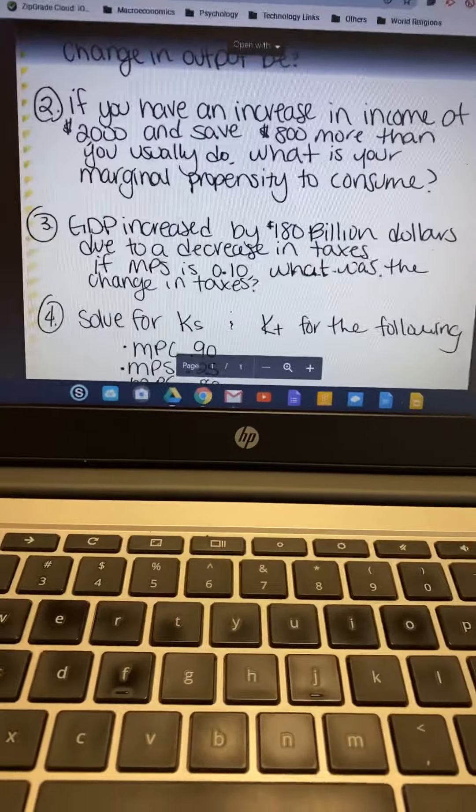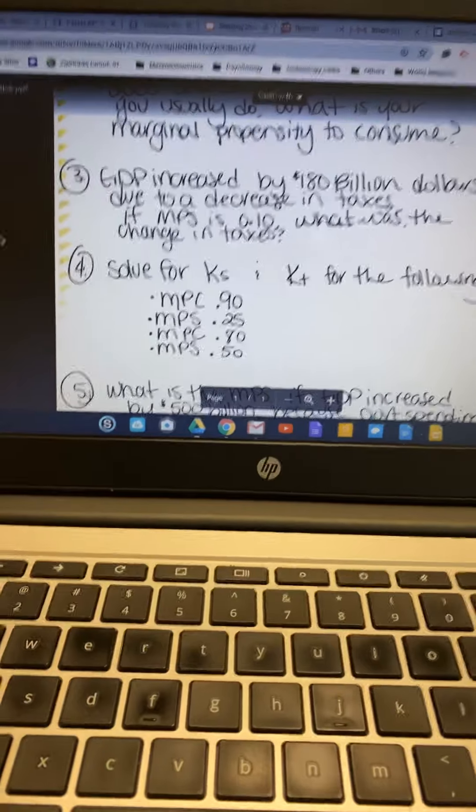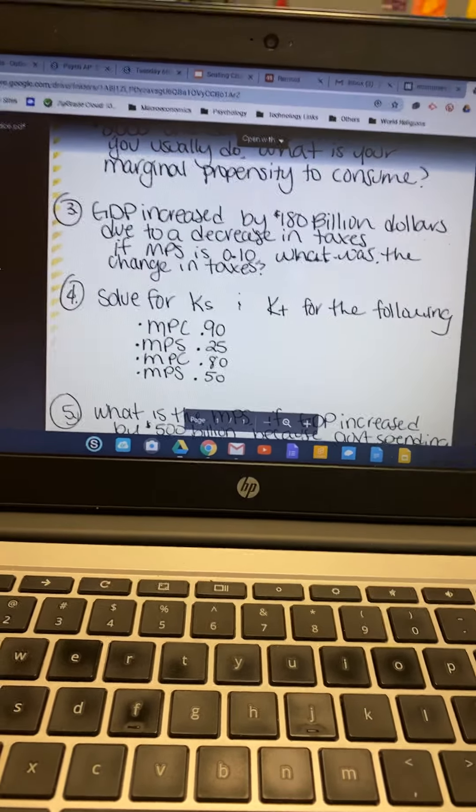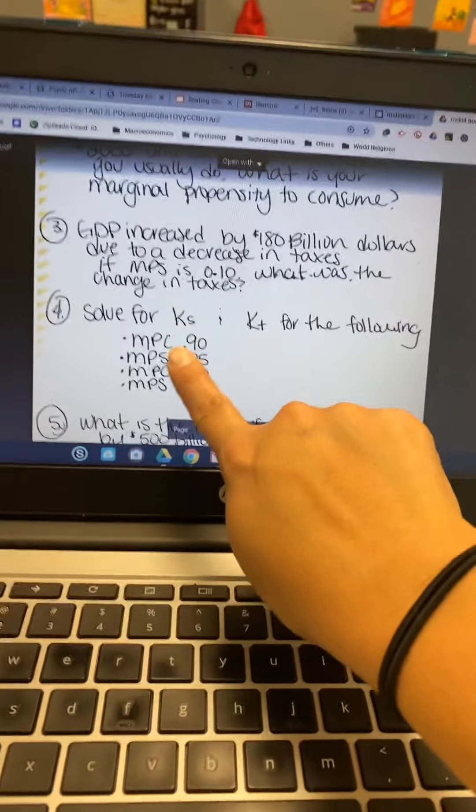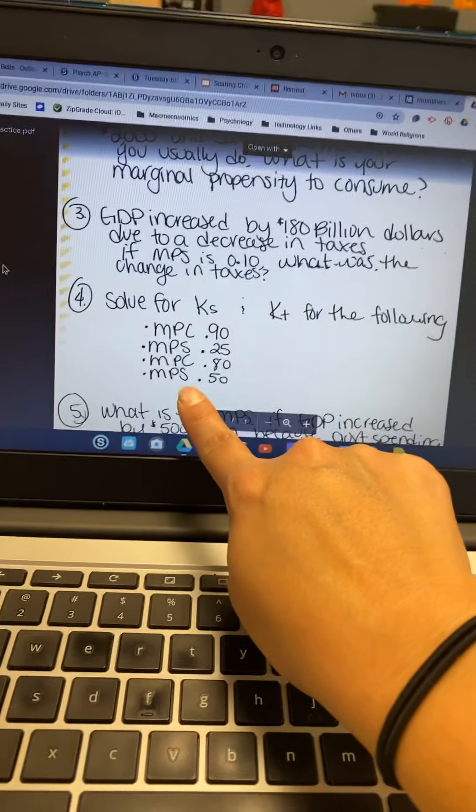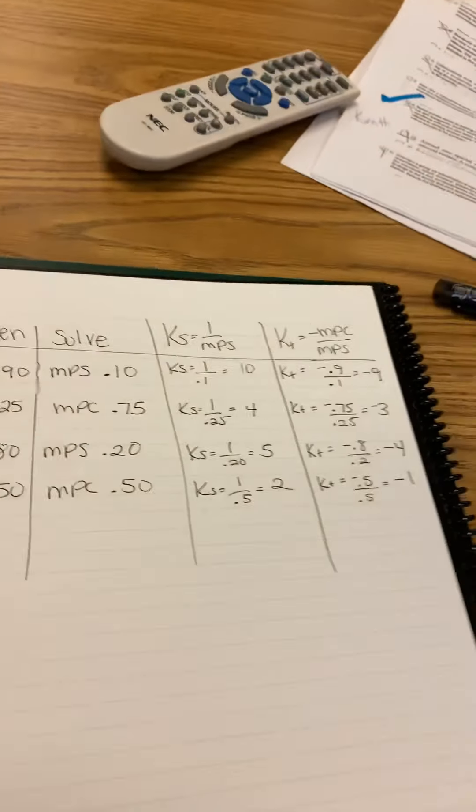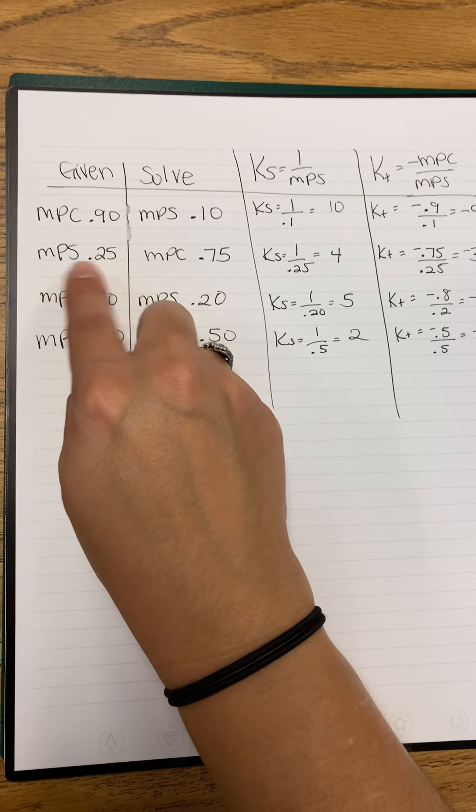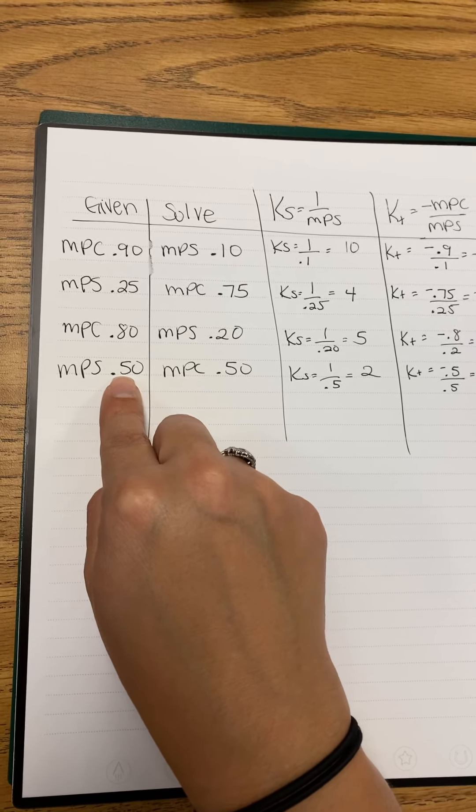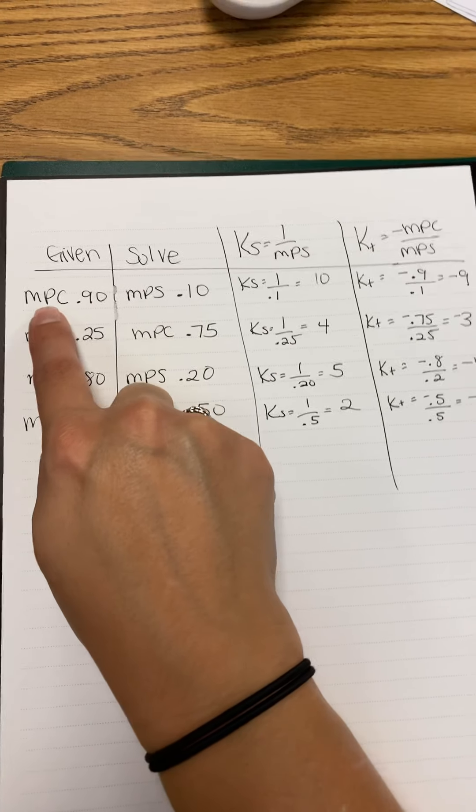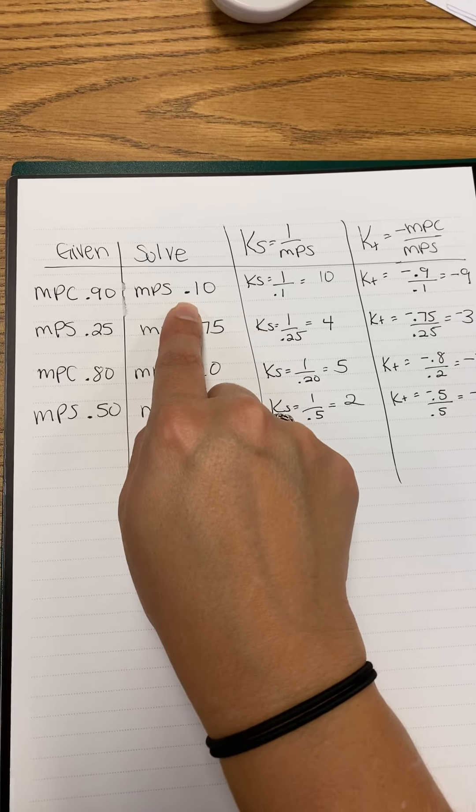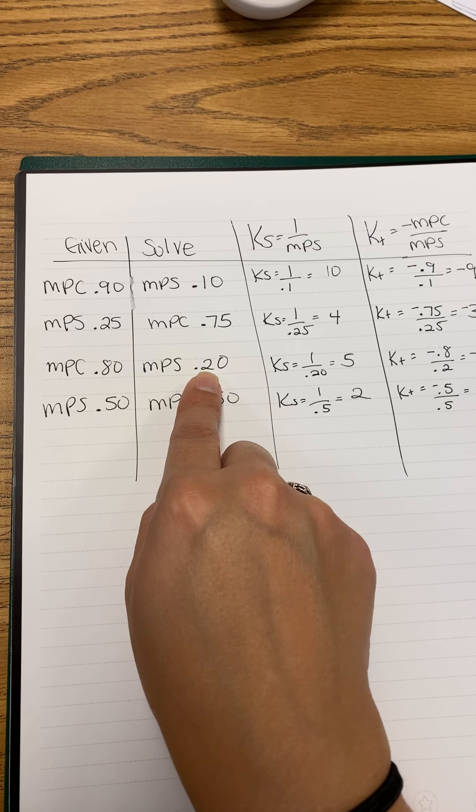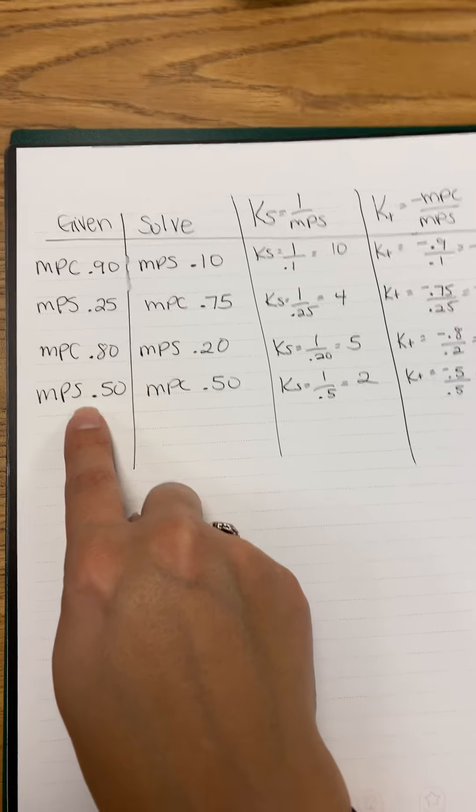On solving for KS and KT, this is just practice. Hopefully you can do this without a calculator. The questions you're going to see most often are using these MPCs and MPSs. I was trying to see if you were paying attention by mixing up - some of these are MPCs, but some are MPSs. Here is my little chart. We have what was given: MPC 0.9, MPS 0.25, MPC 0.8, MPS 0.5. Then I figured out the other side. If MPC is 0.9, MPS is 0.1. If MPS is 0.25, MPC is 0.75. If MPC is 0.8, MPS is 0.2. If MPS is 0.5, then MPC is 0.5.